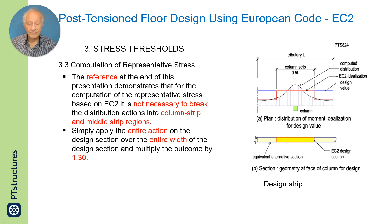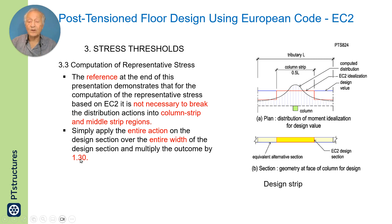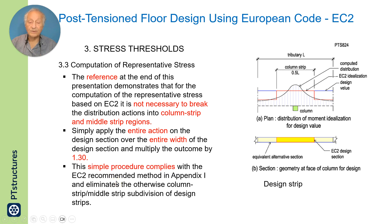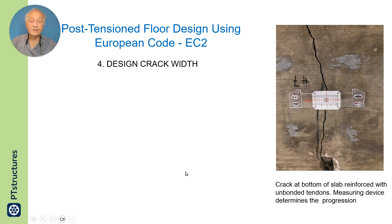The computation of the representative value in EC2 for code compliance can be greatly simplified. Rather than breaking the distribution into a stepwise column strip and middle strip, you can take the entire integral and apply it to the entire cross-sectional area of the strip, then multiply by 1.3. This makes it look exactly like ACI, except that in ACI you don't multiply by 1.3 — instead the allowable stresses are different.